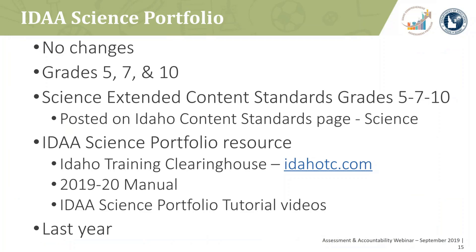A quick recap of changes to the science portfolio: there are no changes this year. It is administered to students in grades 5, 7, and 10 using the old science extended content standards, posted on the content standards page under science. There is also a resource for the Idaho alternate assessment science portfolio, the IPAS system, on the Idaho Training Clearinghouse site and on our alternate assessment page. The 2019-2020 IPAS manual and science portfolio tutorial videos are available. Everything is essentially the same as last year, just updated and refreshed.